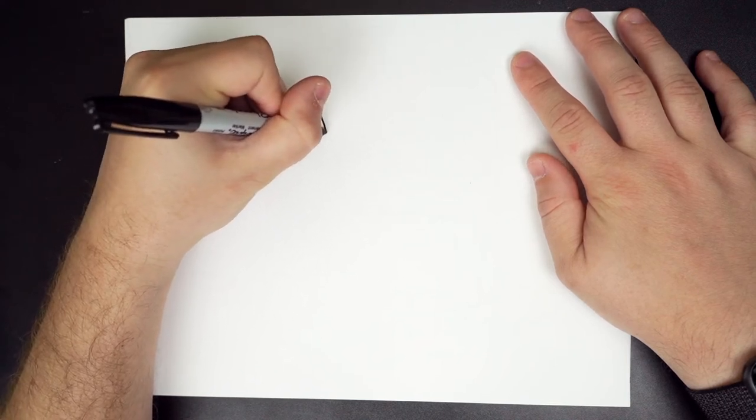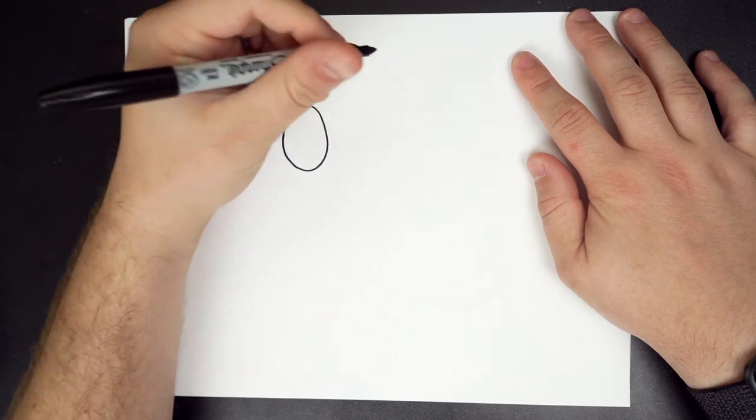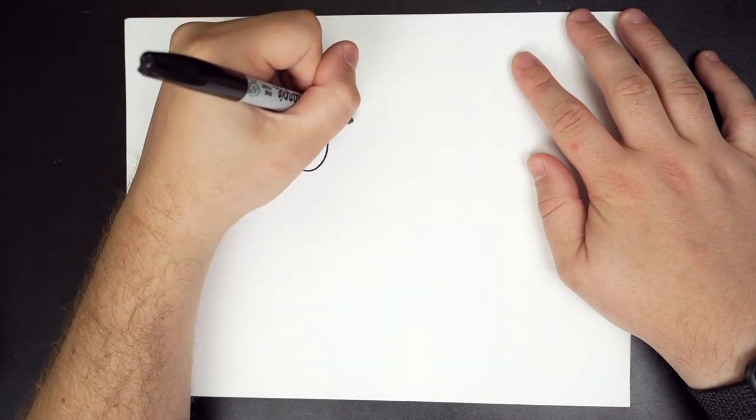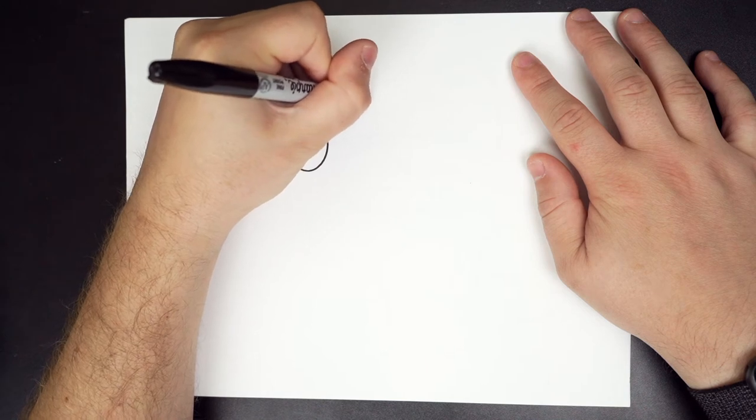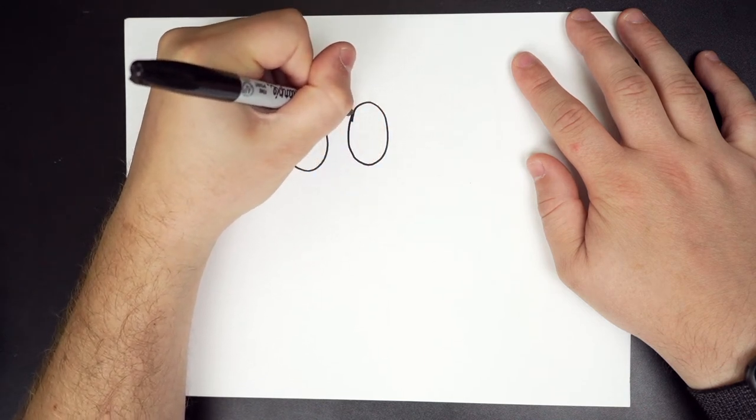So we're going to do ovals, fatter ovals. Come up and around, and then connect. Same thing over here. Connect.